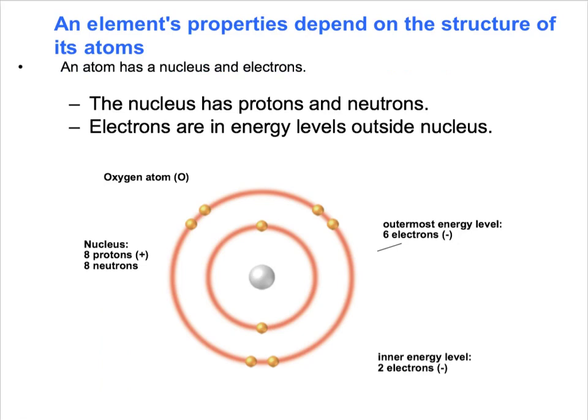If we remember elementary school chemistry or way back in grade nine, remember that an element's properties depend on the structure of its atoms, and atoms are made up of protons, neutrons, electrons. The protons and neutrons sit in the nucleus, packed in there held together by nuclear forces.